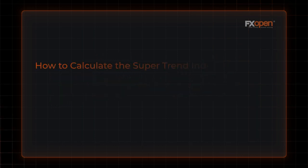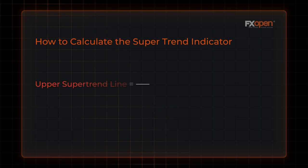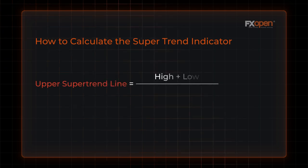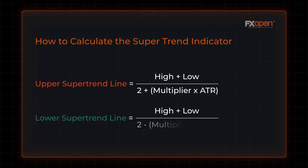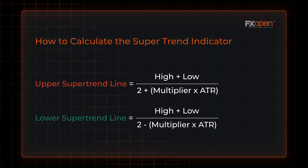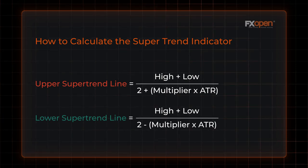The Supertrend is calculated using two key components: ATR and a multiplier. The ATR measures the overall price range of an asset, offering an indication of its volatility. The multiplier allows traders to change the sensitivity of the indicator.